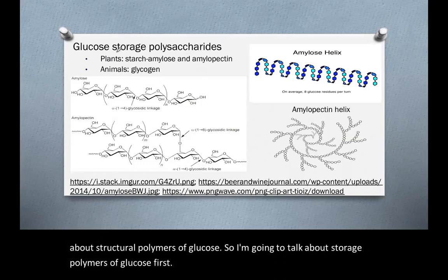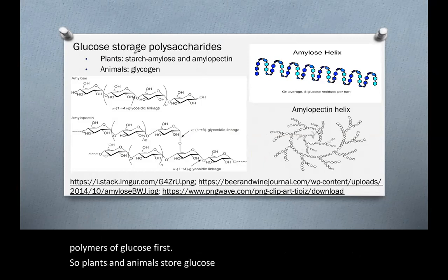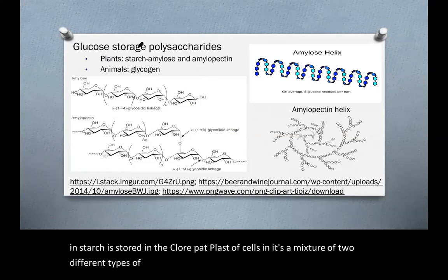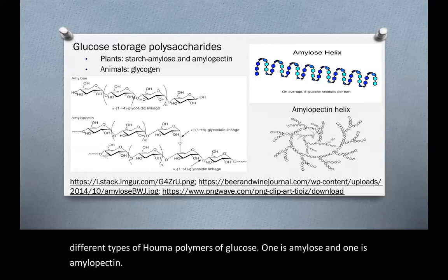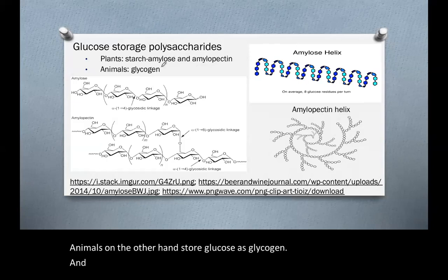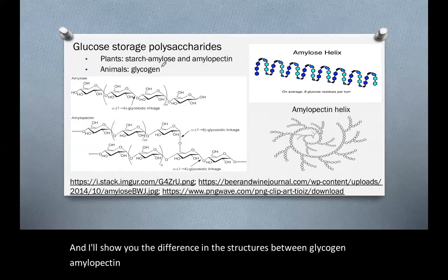Plants and animals store glucose in different ways. Plants store glucose in starch, which is stored in the chloroplast of cells and is a mixture of two different types of homopolymers of glucose: amylose and amylopectin. Animals, on the other hand, store glucose as glycogen, primarily in the liver and muscle cells.